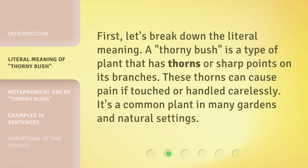First, let's break down the literal meaning. A thorny bush is a type of plant that has thorns or sharp points on its branches. These thorns can cause pain if touched or handled carelessly. It's a common plant in many gardens and natural settings.